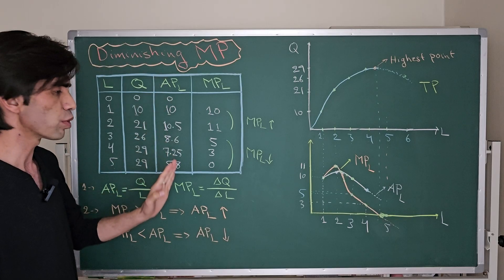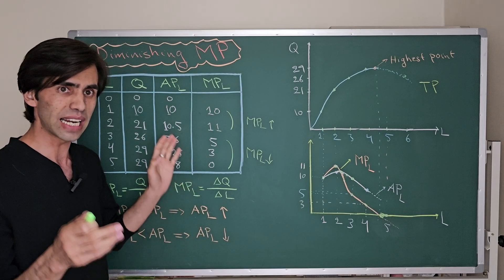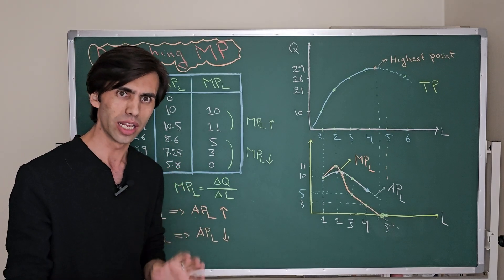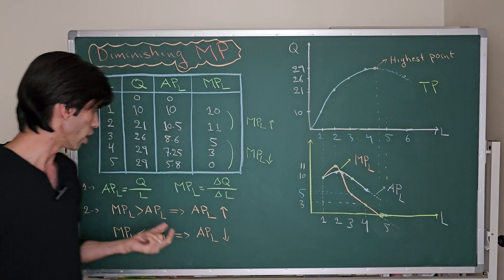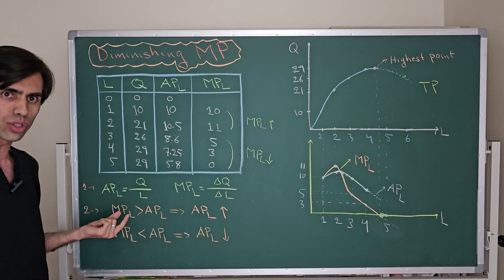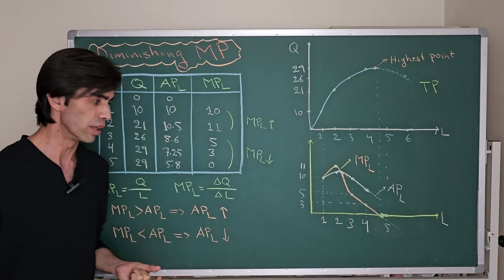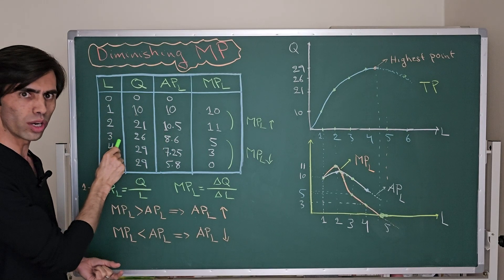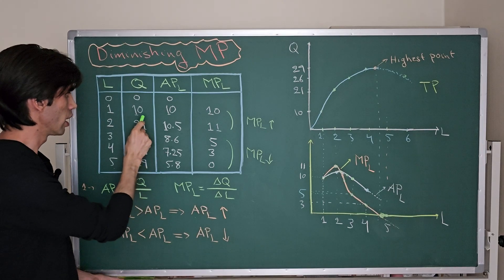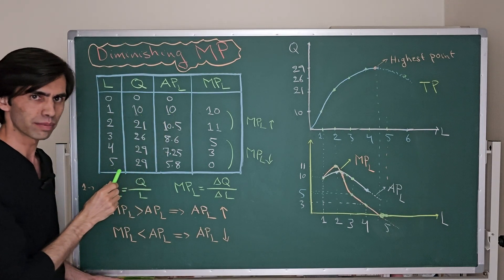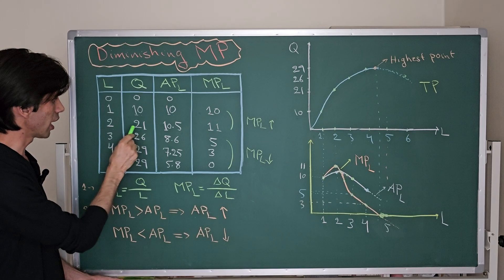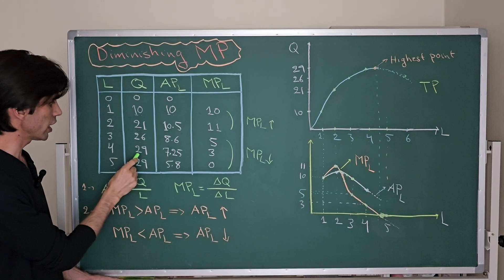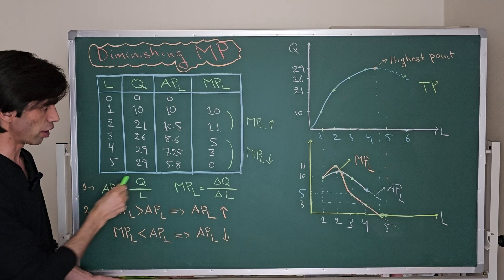So the question is: what is the average product of labor and marginal product of labor? What is the relationship between average, marginal, and total product of labor — how are they connected to each other? The average product of labor is the total amount of output divided by the total number of workers. When you have just one worker producing 10 pizzas, 10 divided by 1 is 10. When you are producing 21 and you have two workers, 21 divided by 2 is 10.5. Then 26 divided by 3, and 29 divided by 4.